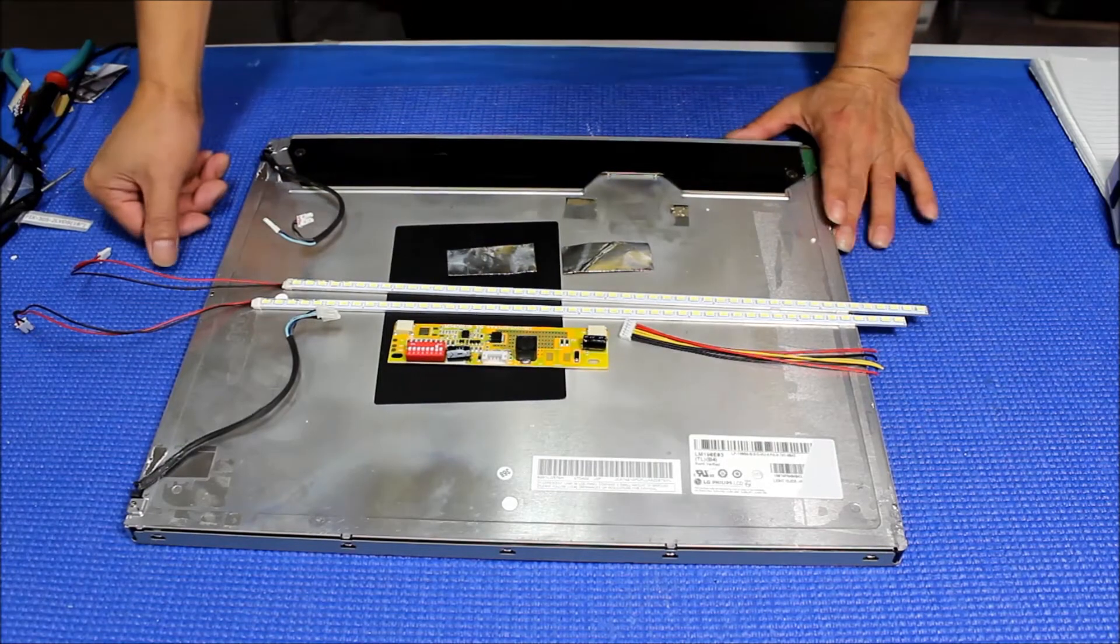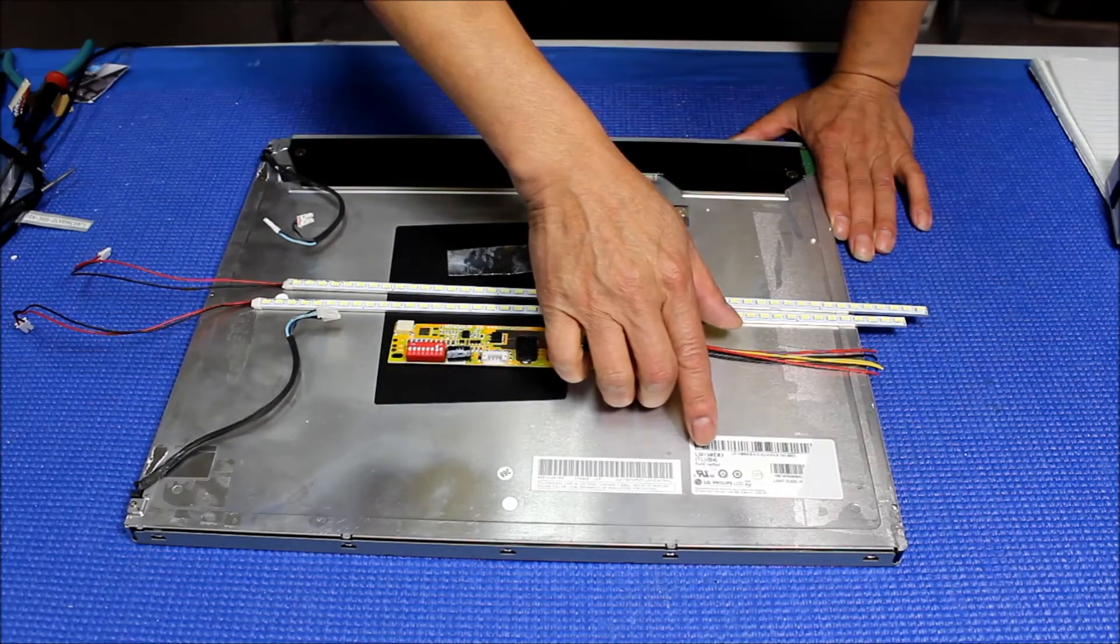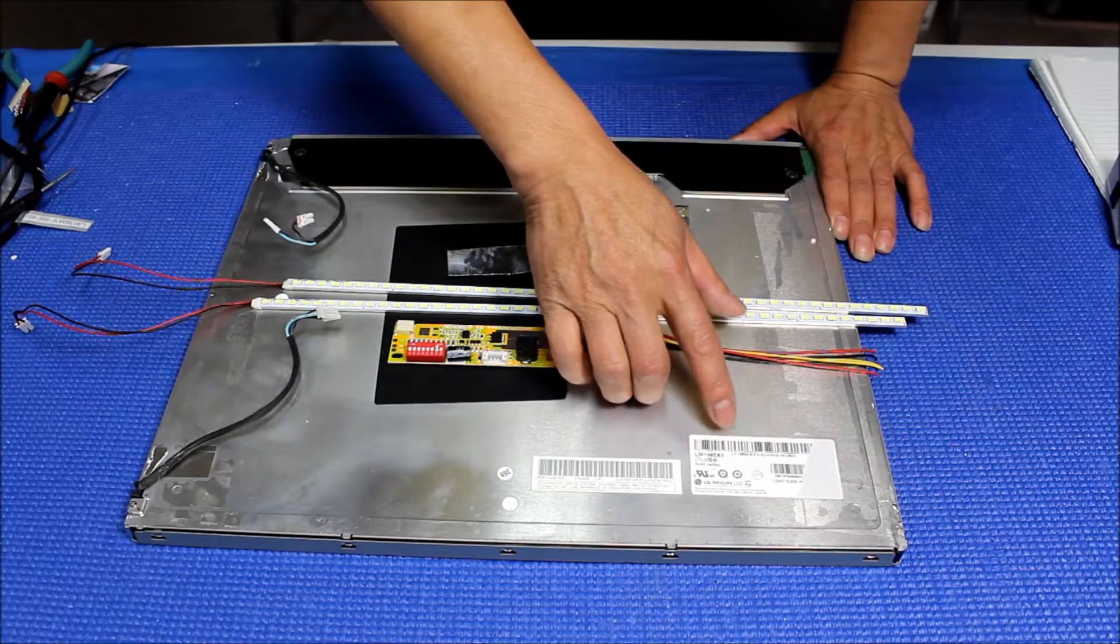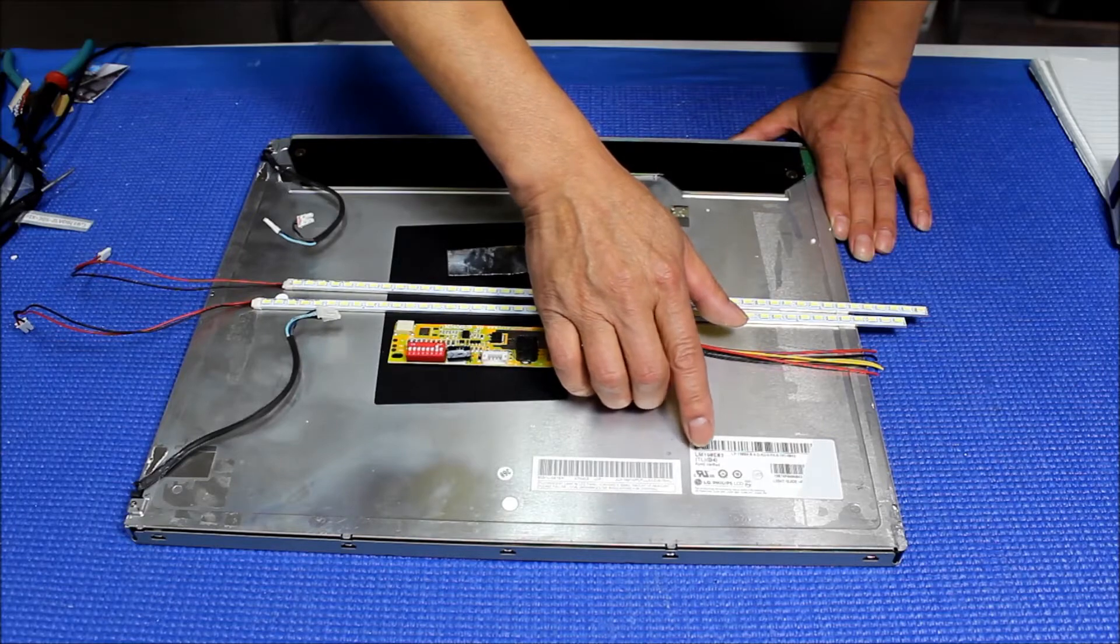This screen is made by LG Philips. The screen number is LM190E03TLB4.